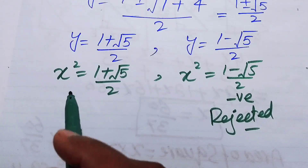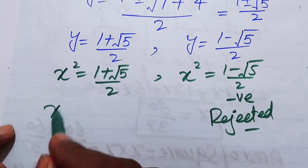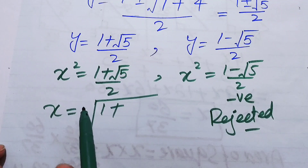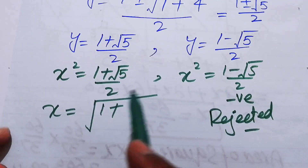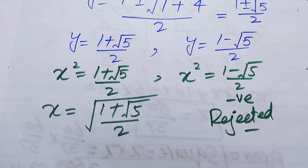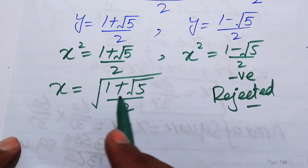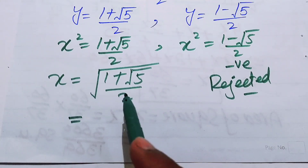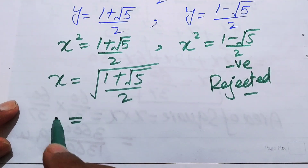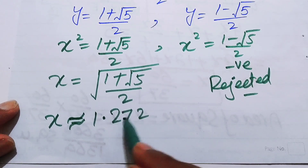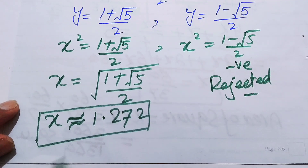We proceed with x² = (1 + √5)/2 only. Taking the square root of both sides, we take only the positive value since x is a side length and cannot be negative. Therefore x = √((1 + √5)/2). Using a calculator, this value is approximately 1.272, and this is our final answer.